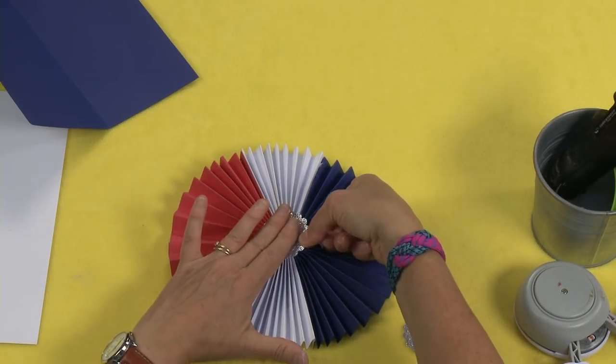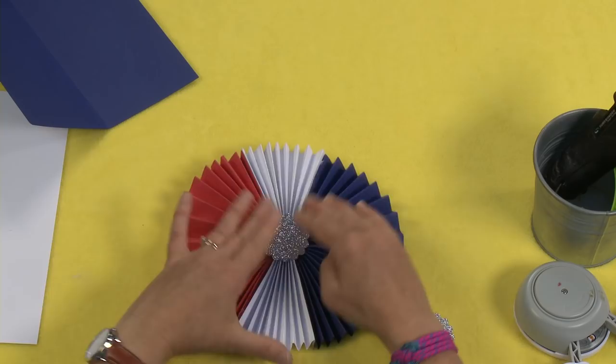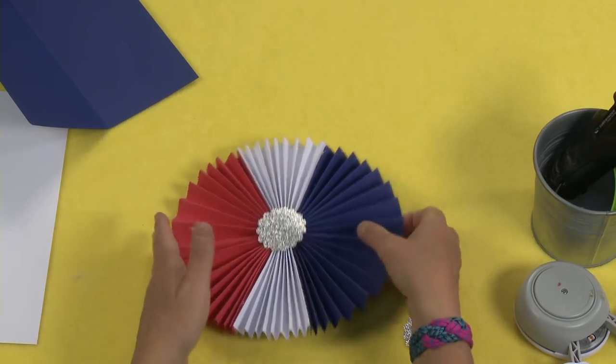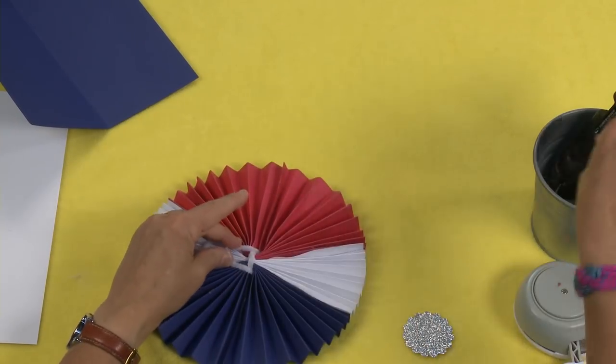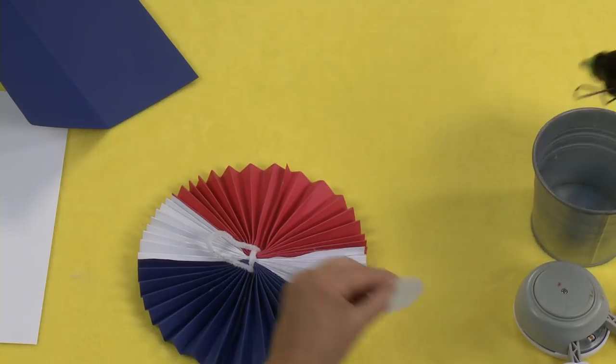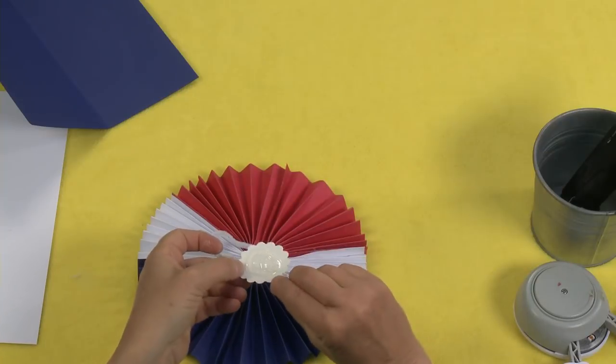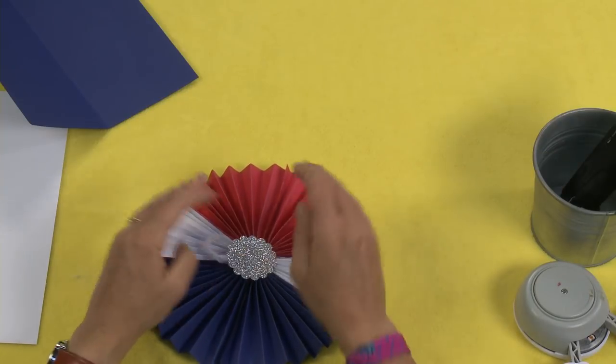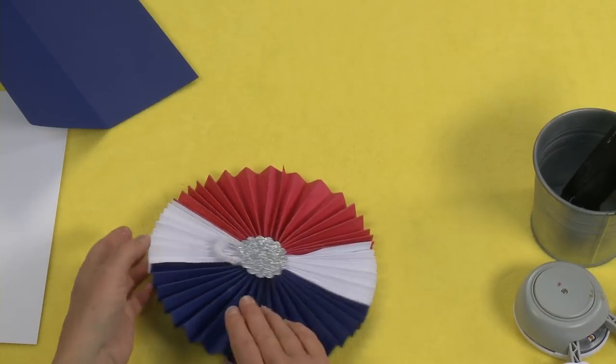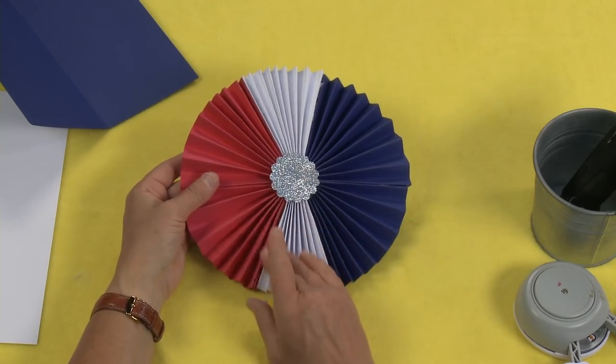And then just hot glue right over top. Flip it over and do one on the back. There you go. And you end up with this very cool rosette.